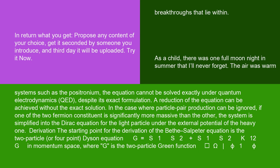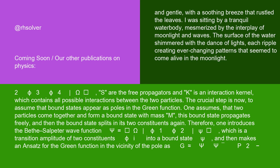Where G is the two-particle Green function ⟨Ω|φ₁φ₂φ₃φ₄|Ω⟩, S are the free propagators, and K is an interaction kernel, which contains all possible interactions between the two particles.